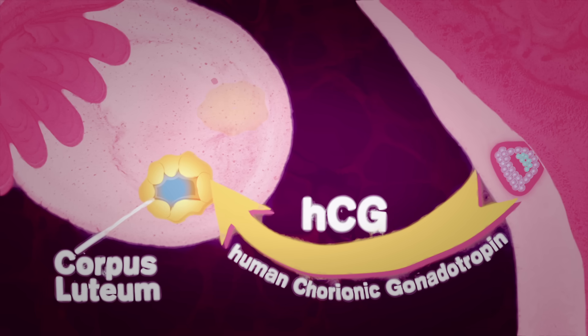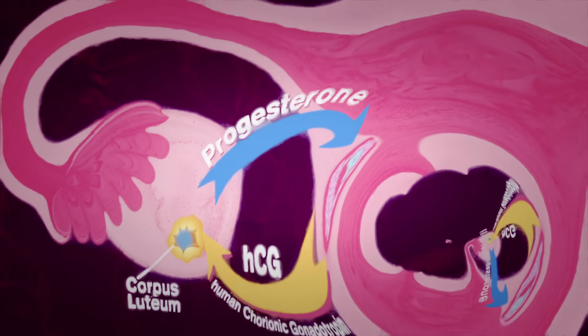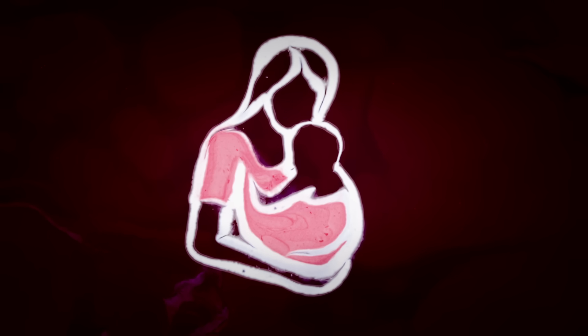The corpus luteum is responsible for producing the progesterone required to maintain the pregnancy until six to seven weeks of gestation, when the placenta develops and takes over until the baby is born approximately 40 weeks later.